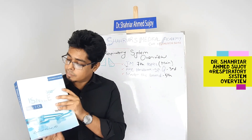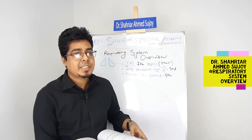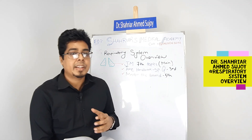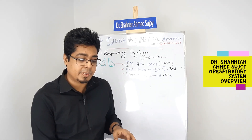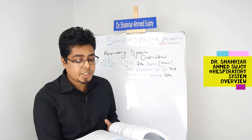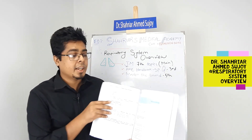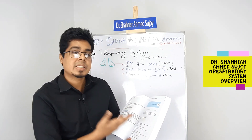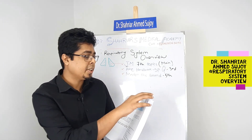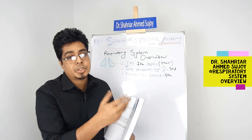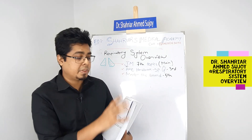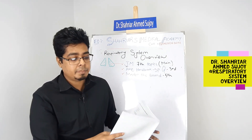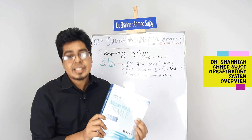Apart from John Murtagh, we also use another book called Master the Board. It's a very nice book — previously not many people used it for AMC, but it's very good. It has a chapter on pulmonology, though not everything is required. Specifically, topics like asthma, pneumonia, sarcoidosis, and a few similar conditions should be checked from Master the Board. It's very well and easily written, so anyone can follow it.